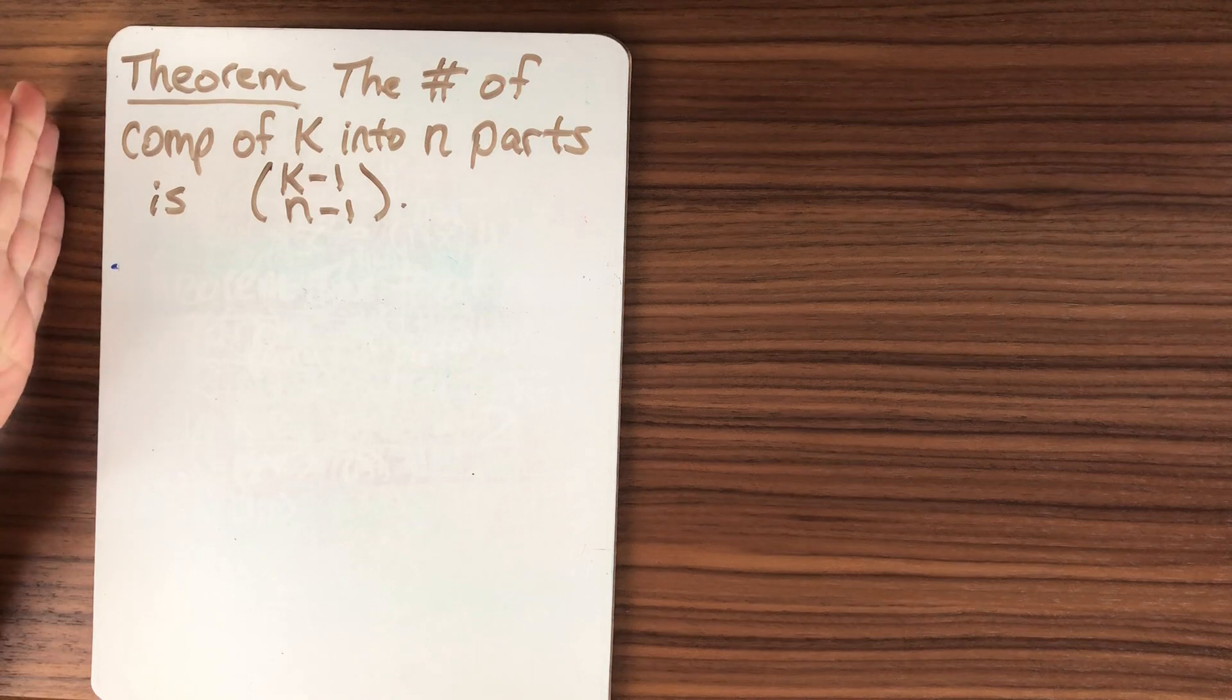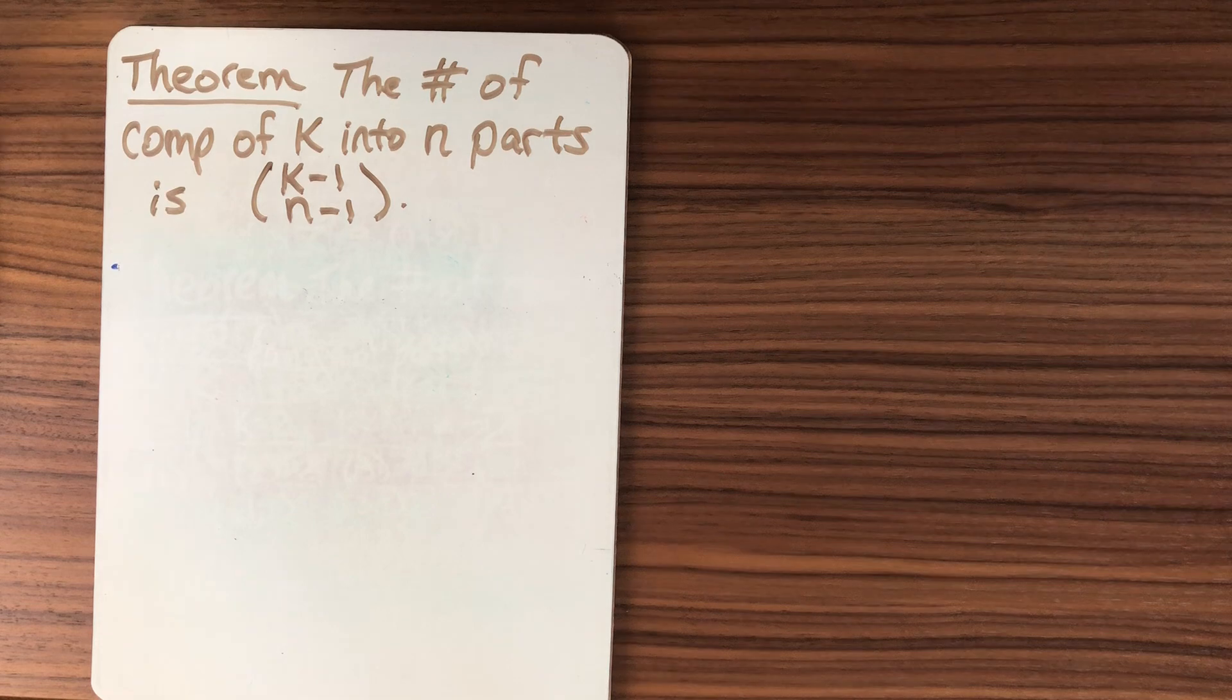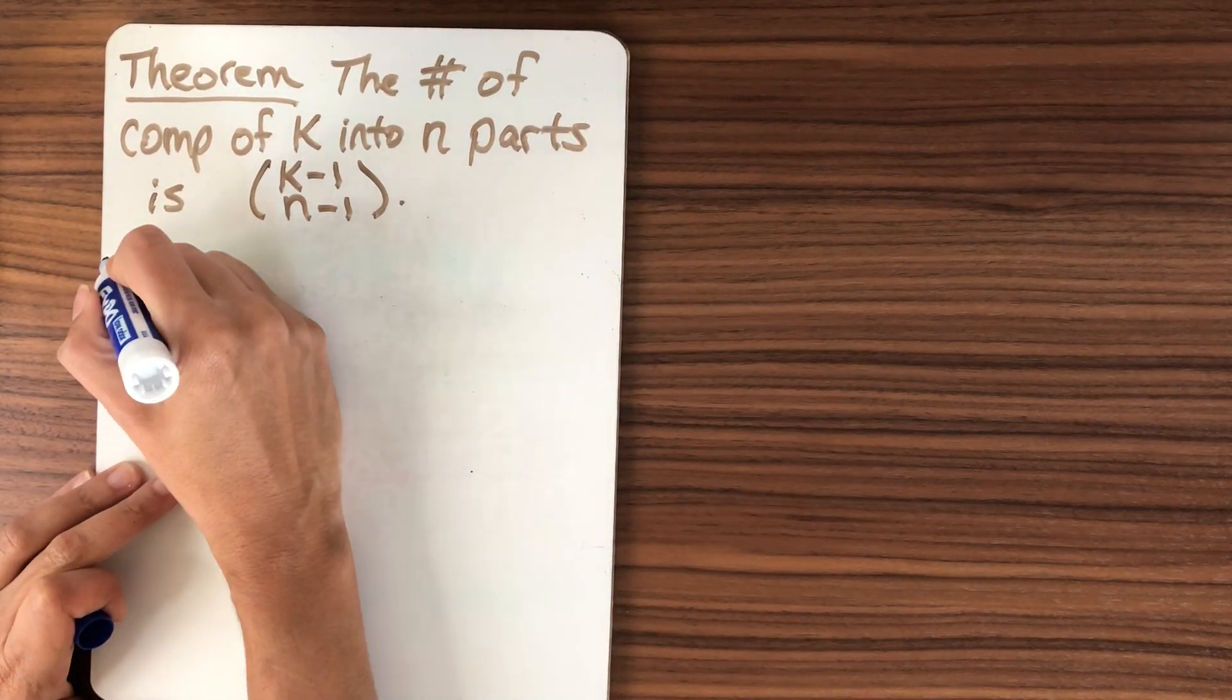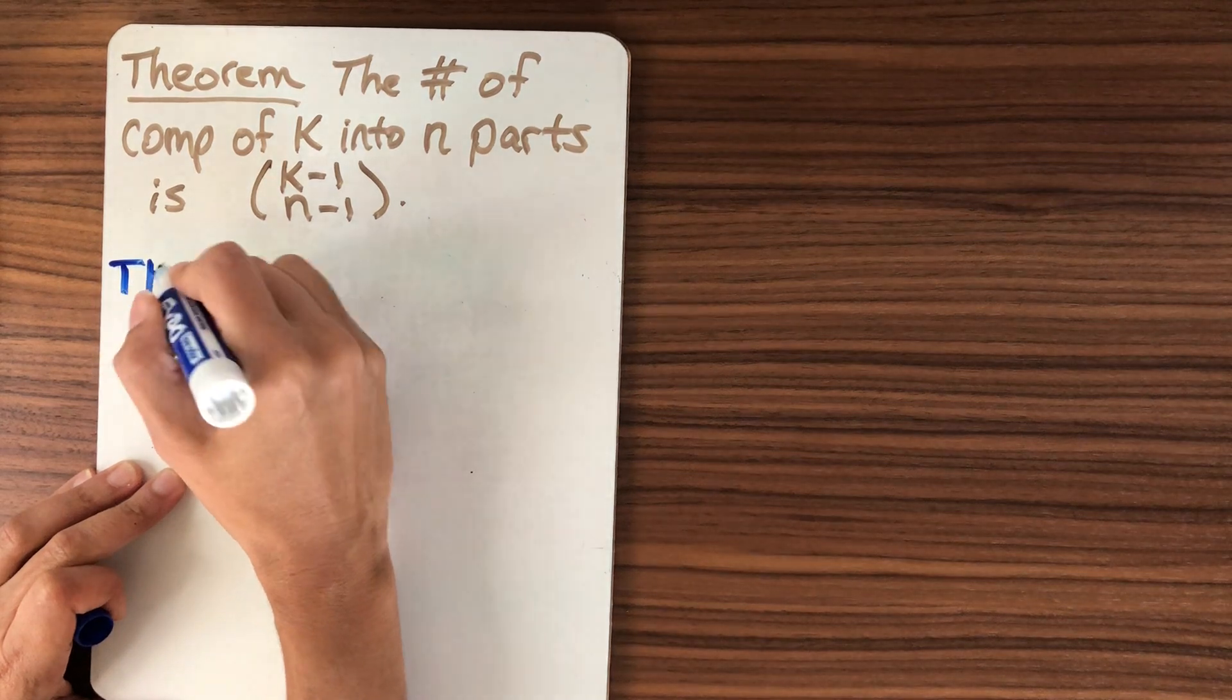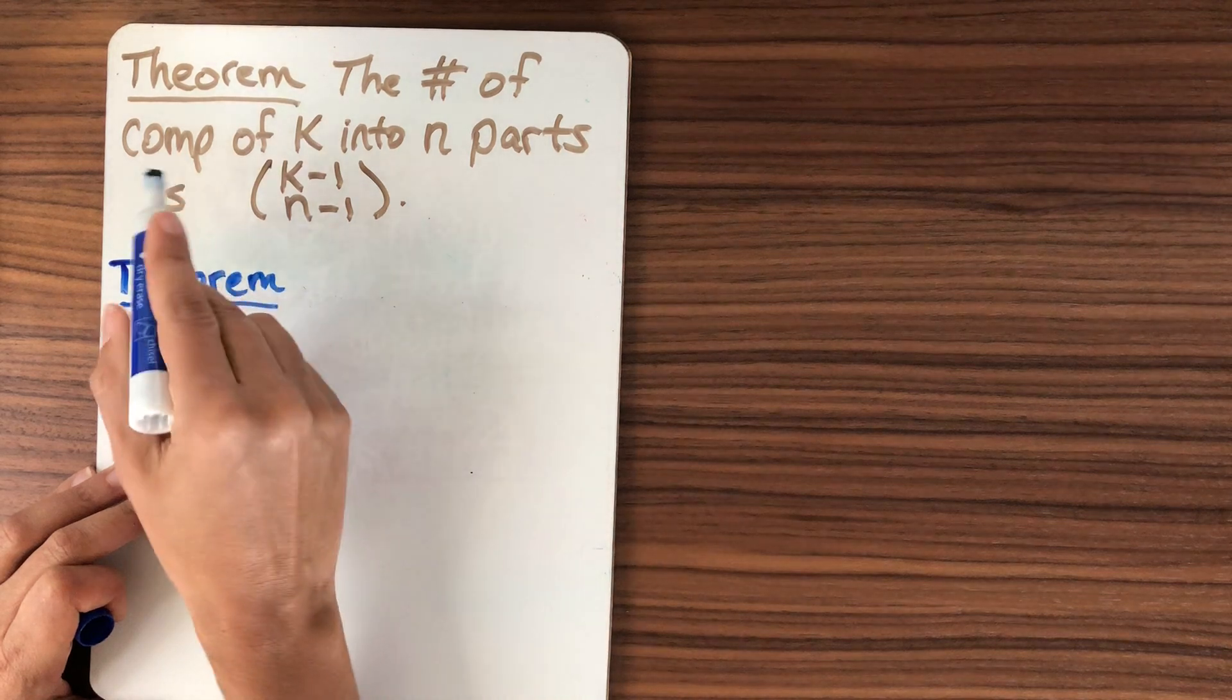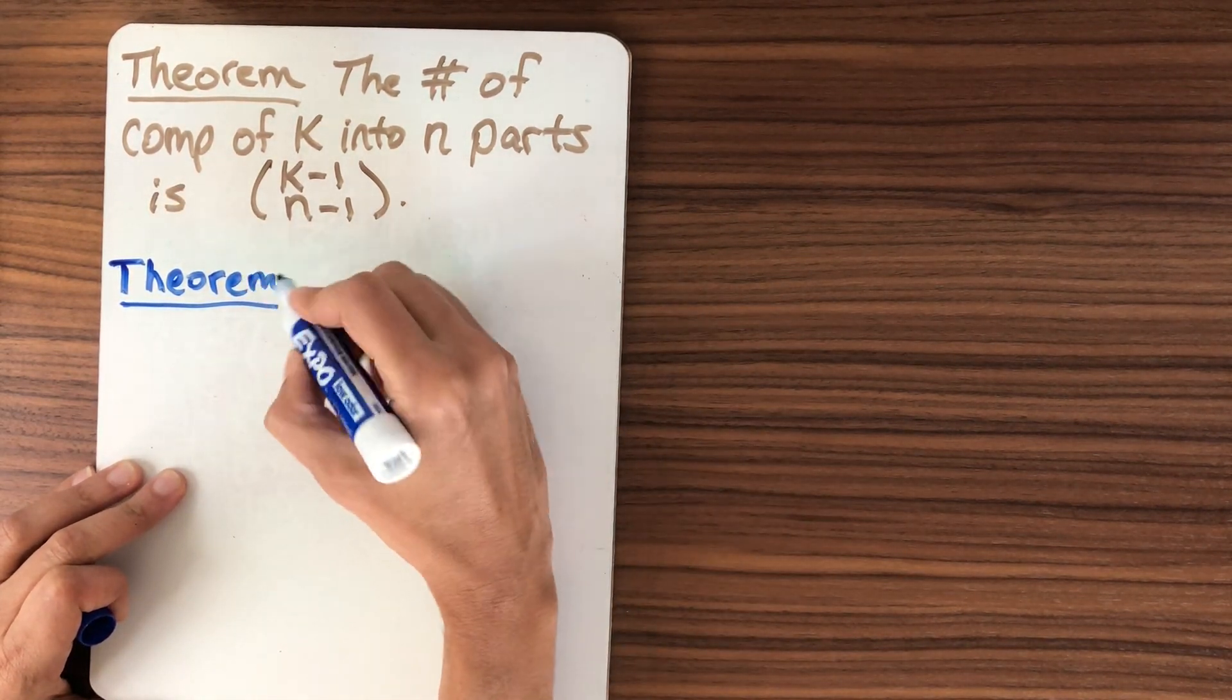But with a strong composition, our smallest part is one, so we can't have infinitely many parts if we fix k. So another problem that we could ask ourselves, another question, which we'll state as a theorem, is what happens if we remove the constraint on n and we just want to count compositions of k and we don't mind about the parts. So that's what we want to count next.